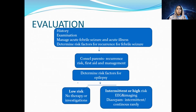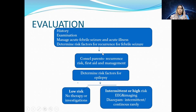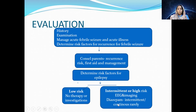Evaluation: take a detailed history, perform examination, manage the acute febrile seizure and acute illness, and determine the risk factors for recurrence. Counsel parents about recurrence risk, first aid, and management. Determine the risk for epilepsy — if low risk, no therapy is required; if intermediate or high risk, perform EEG and consider starting intermittent or continuous prophylaxis.